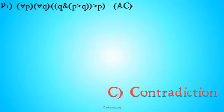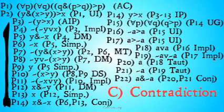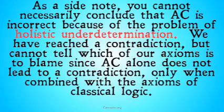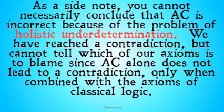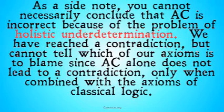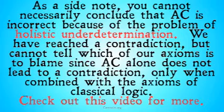You're irrational if you do and irrational if you don't. If you want to see how the assumption of the consequent leads to a contradiction, there's a proof for it — pause the video now if you want to try it yourself. Here's the way I proved it; there are other ways, but basically it leads to a contradiction. As a side note, you can't necessarily conclude, even outside the framework of Bayesian epistemology, that assumption of the consequent is incorrect, because of the problem of holistic underdetermination. We've reached a contradiction, but we cannot tell which axiom is to blame, because assumption of the consequent alone does not lead to a contradiction — only when combined with the other axioms of classical logic. Check out the video on holistic underdetermination for more on that.